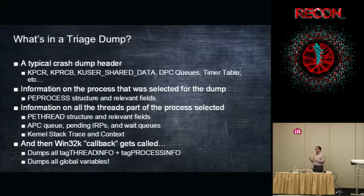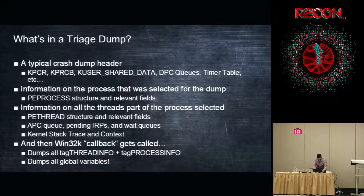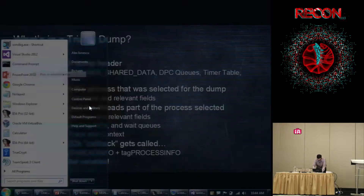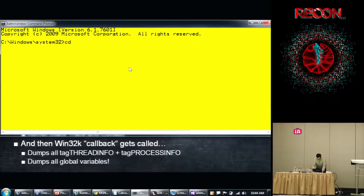There's actually a built-in tool that exercises this undocumented API. If you get the Windows Debugging Tools, there's a little utility called kdbgctrl. If you pass in TD for triage dump and give it a PID and a filename, it will create the dump.